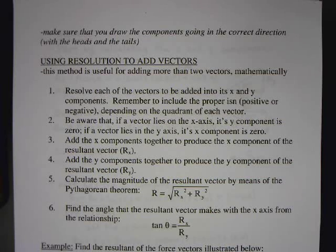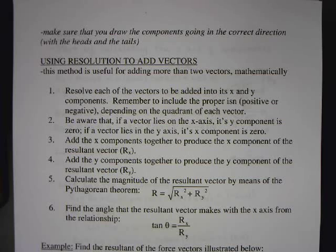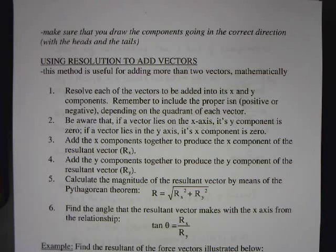What we're going to do today is use something called vector resolution to add vectors. Normally we do this when we have more than two vectors, because when we add vectors head to tail and there's only two, we have a triangle. If it's a right triangle, we can use the Pythagorean theorem and definition of sine, cosine, and tangent. If it's an acute or obtuse triangle, you could use law of cosines and law of sines. But we're going to learn how to do it for any triangle, even with 3, 4, or 5 vectors, which makes it really simple.